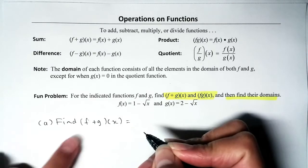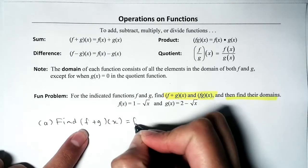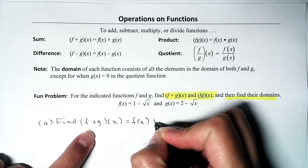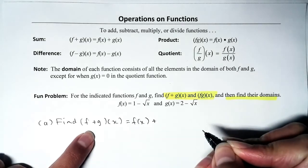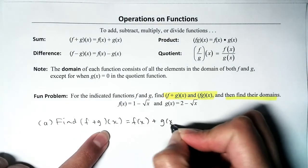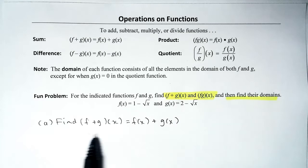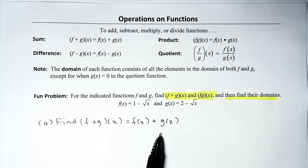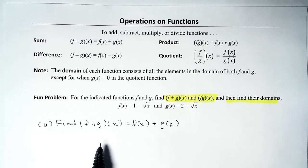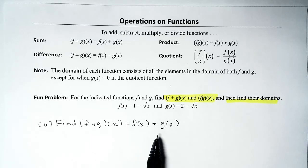We're going to take the first function f, which is a function of x, and the operation is plus. What are we going to add to function f? The second function g, which is also a function of x. When we apply the definition of the sum function, it's easier to digest — I know how to add these: just take the first function and add to it the second function.